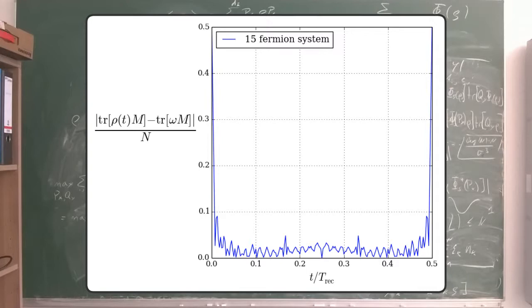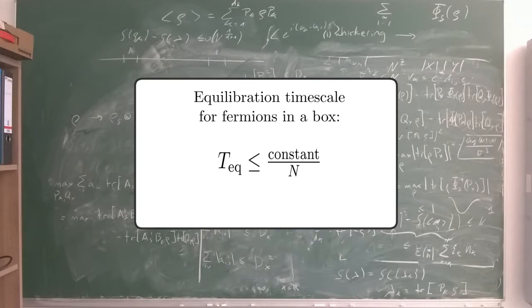For systems with larger and larger numbers of fermions, these fluctuations become smaller and smaller. Furthermore, the equilibration timescale decreases as the number of fermions grows.